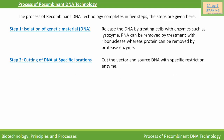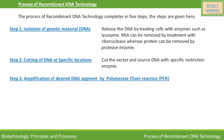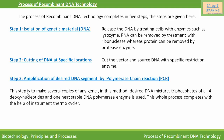Now come to the third step, i.e. amplification of the desired DNA segment by polymerase chain reaction, or PCR. This step is to make several copies of any gene. In this method, the desired DNA mixture, triphosphates of all 4 deoxyribonucleotides, and one heat-stable DNA polymerase enzyme are used. This whole process completes with the help of an instrument called a thermocycler.